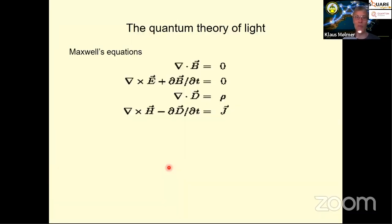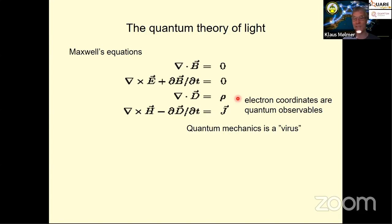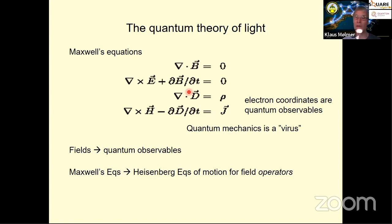From a more foundational point of view, let's jump back to Maxwell's equations — the theory of light. As written, it's the classical theory. But as soon as we quantize the electron motion, the charge density and current become quantum mechanical. It's a bit like a virus: if part of your system gets infected with non-commuting quantities, that quickly spreads to everything else. So the quantum theory of light uses the same equations, just admitting that the E and B fields become operators.